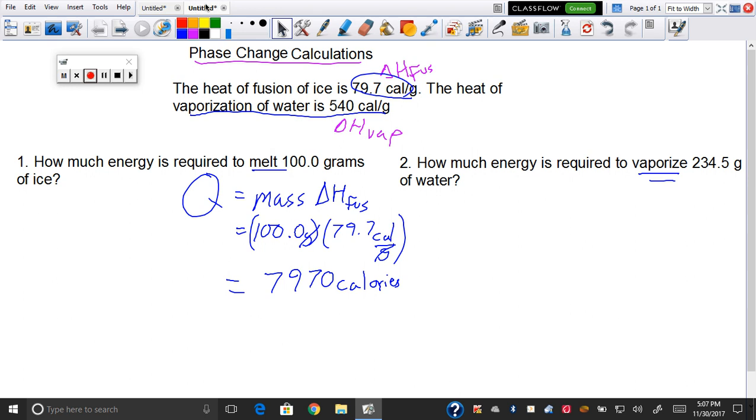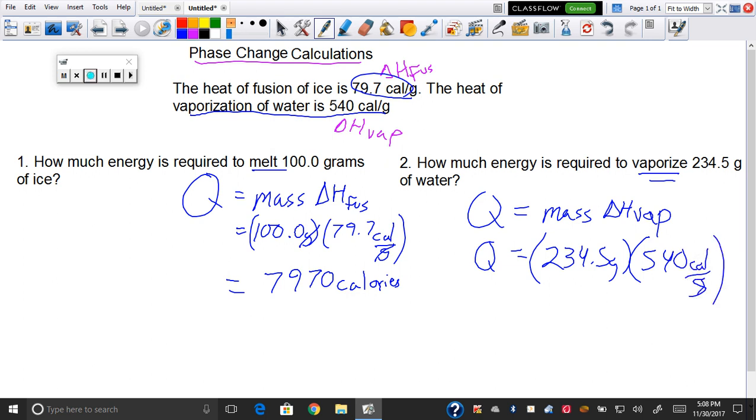I can use mass - Q equals mass times the delta H of vaporization. So Q equals 234.5 grams times 540 calories per gram. The most important thing you get out of this is that the grams cancel.